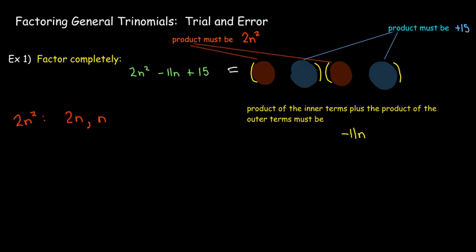How can I get 2n²? I can multiply 2n times n — that's about it. And how can I get positive 15? Since it has to add to make a negative number, I'm looking for two negative numbers: negative 1 times negative 15, negative 3 times negative 5, negative 5 times negative 3, or negative 15 times negative 1. Then I just try them.